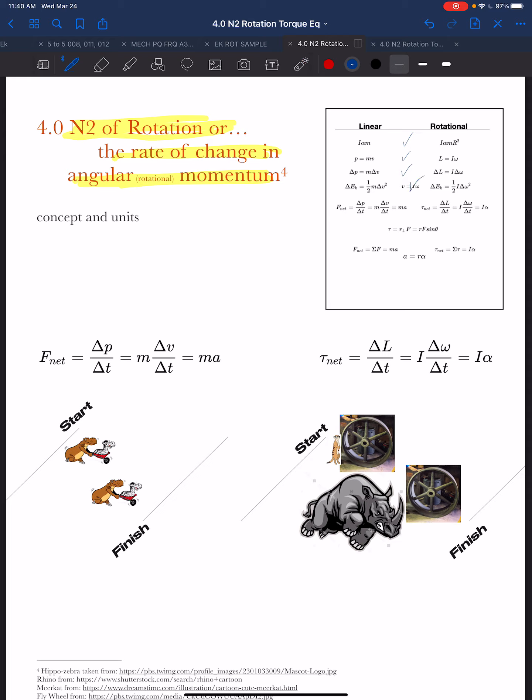And now we are on to Newton's second law of rotation. So this is today's focus. We have in the linear world, over here to the left, Newton's second law, F net equals ma, the most common version of it. But what we learned is that really the definition of the net force isn't ma, it is the rate of change of momentum, delta p over delta t.